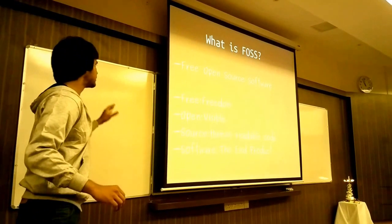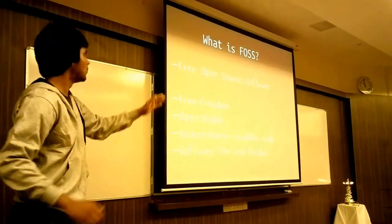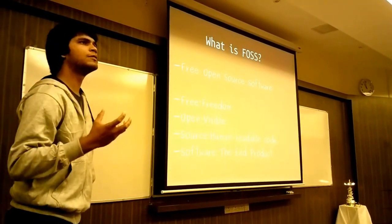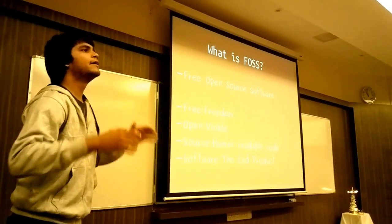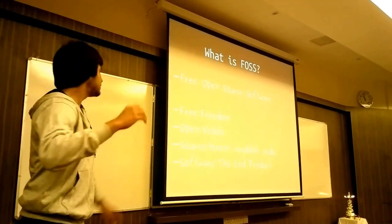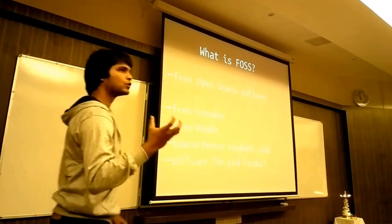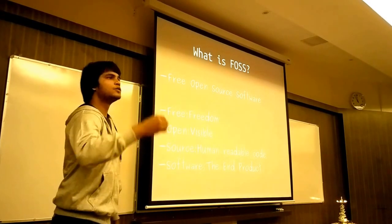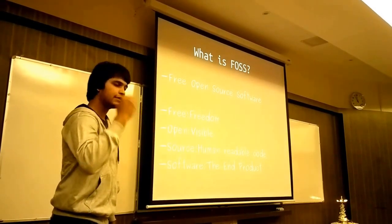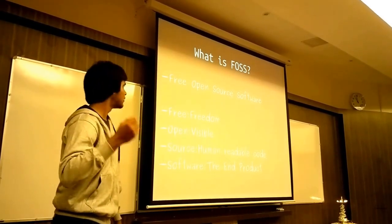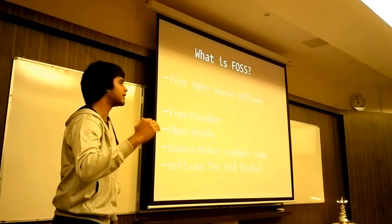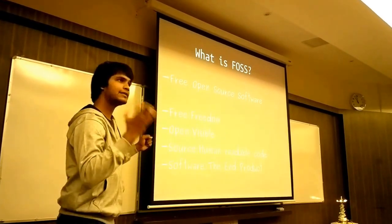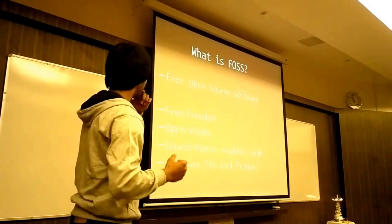I'll explain what source is first. To understand all four points, you need to know what source means. We're computer programmers. Whenever a programmer says he's writing a program, that means he's writing the source code — say, for example, writing something in C. Only if you understand the language and how C works will you understand what he's writing. That is the source code — the very heart of a software program.